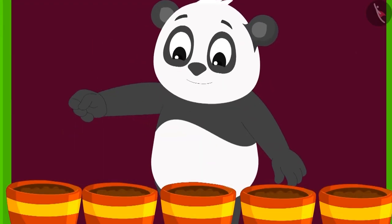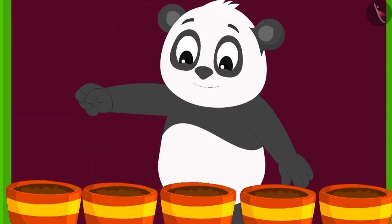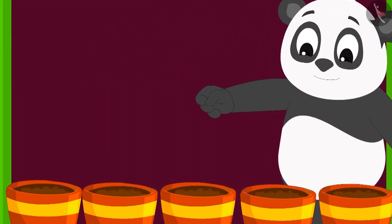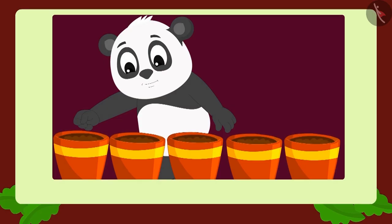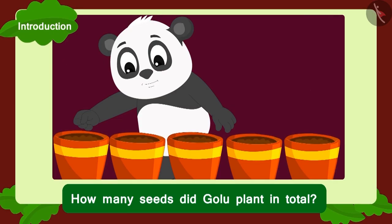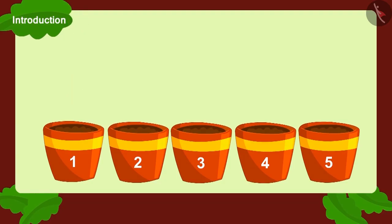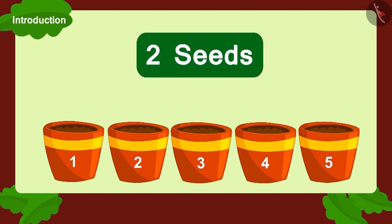Golupanda planted two seeds each in five pots. Can you tell how many seeds did Golupanda plant? In all, Golupanda planted seeds in five pots. And how many seeds did he plant in each pot? Two seeds.